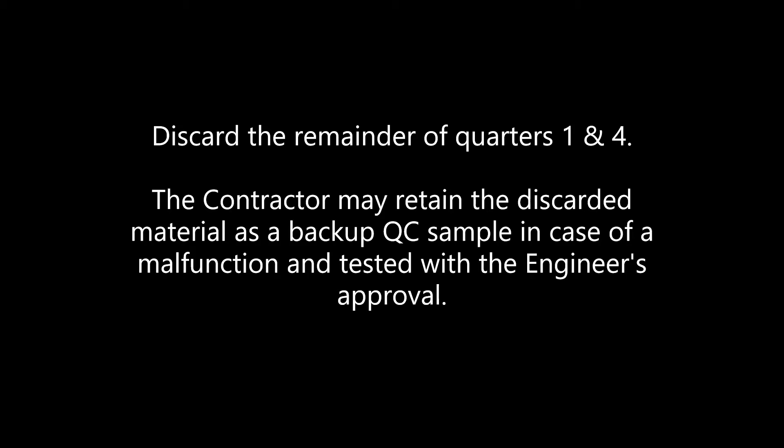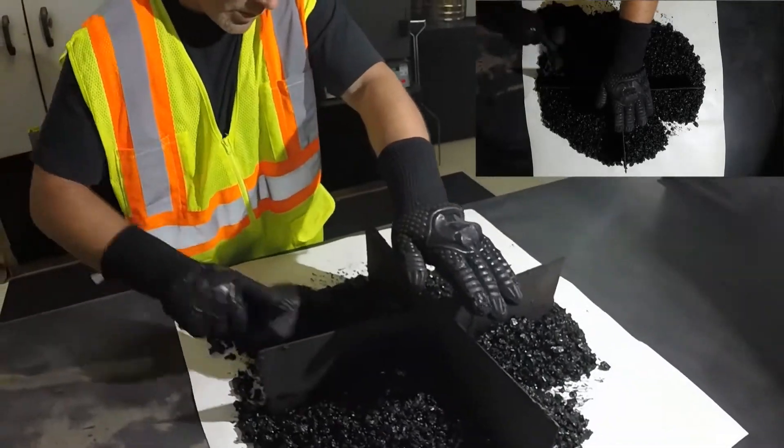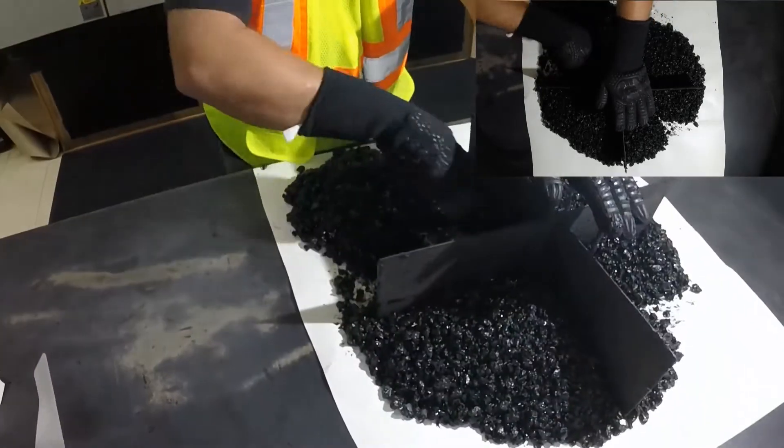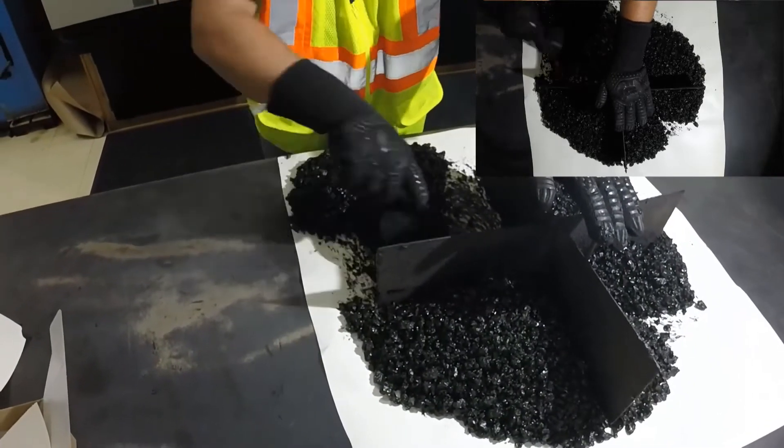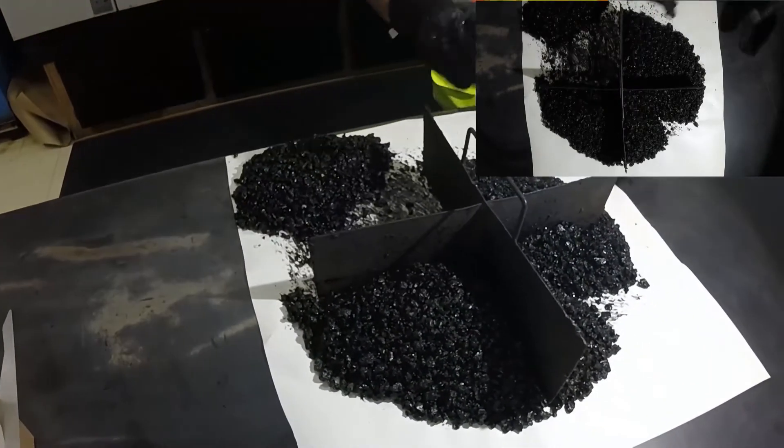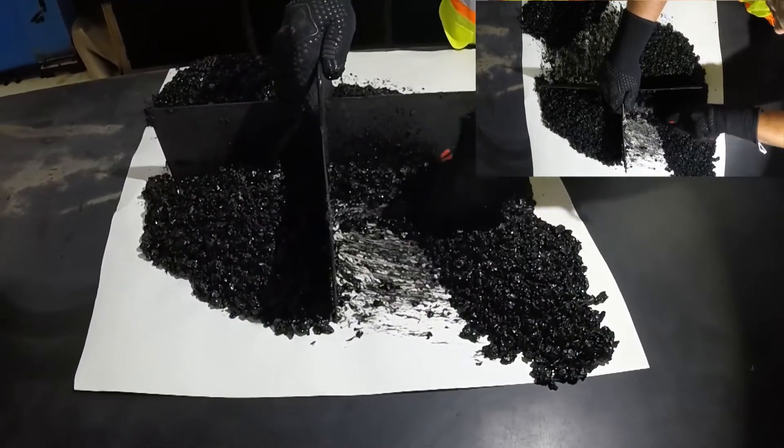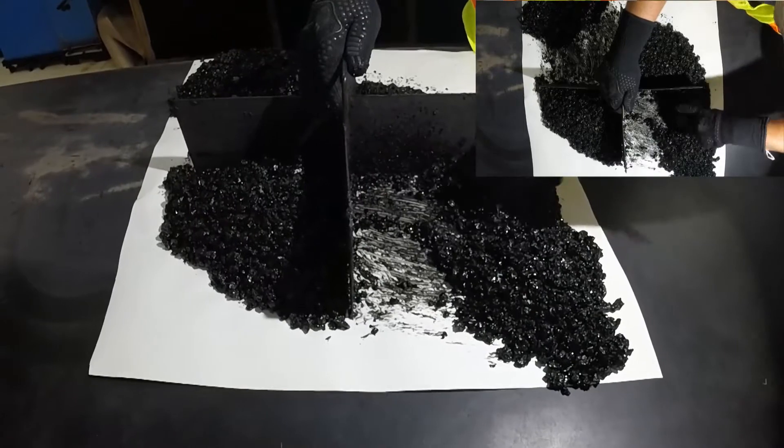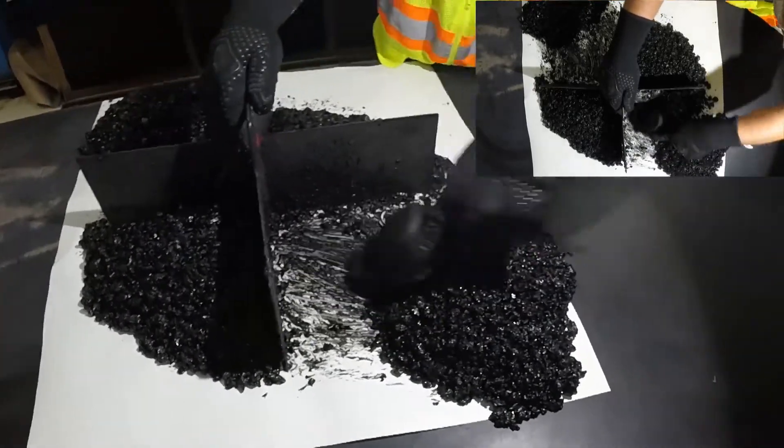Discard the remainder of quarters one and four. The contractor at his option may retain the discarded material to use as a QC backup sample. Store the discarded material in a silicone lined box, and in case of a spill or malfunction, and with the engineer's approval, this material may be tested and the results used as a QC sample.